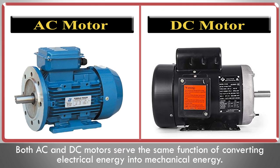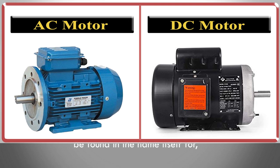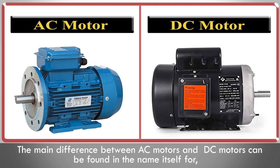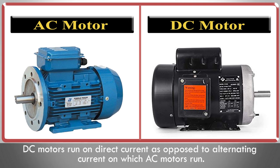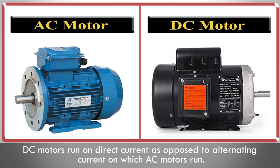Both AC and DC motors serve the same function of converting electrical energy into mechanical energy. The main difference between AC motors and DC motors can be found in the name itself: DC motors run on direct current, as opposed to alternating current on which AC motors run. In this video we will learn the difference between AC motors and DC motors.